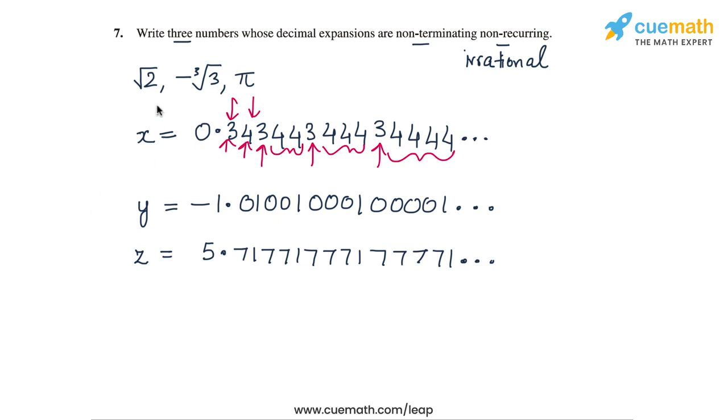So these are the two ways to answer this question. One way is to just write some irrational numbers that we already know of and the other way is to construct three numbers with decimal expansions that have no recurring pattern. So they will be non-terminating, non-recurring decimals.